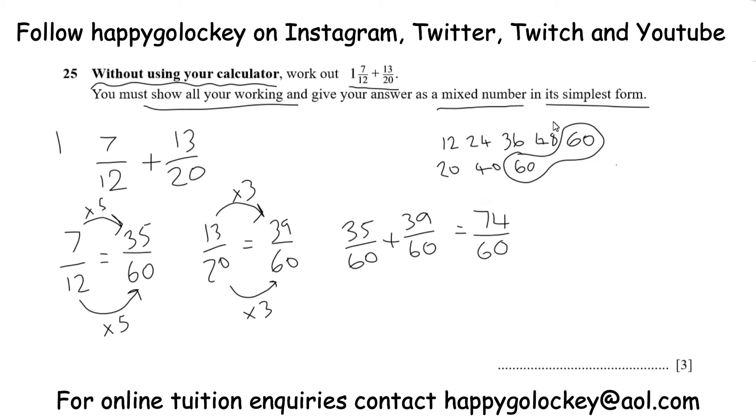Now don't forget, we've still got this 1 from the question earlier on, which is obviously 60 60ths to make a whole. So we've got 1 and 74 60ths.